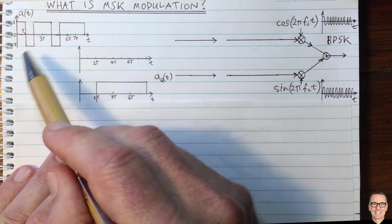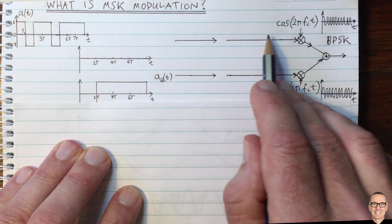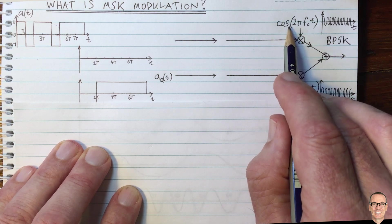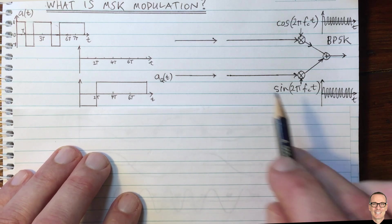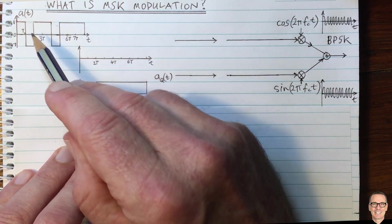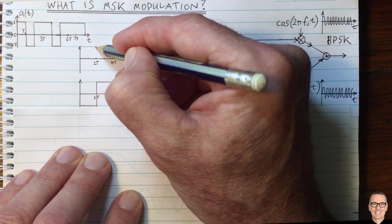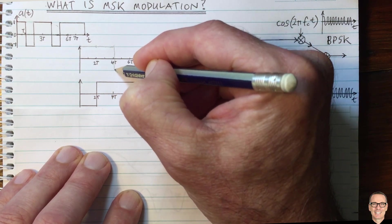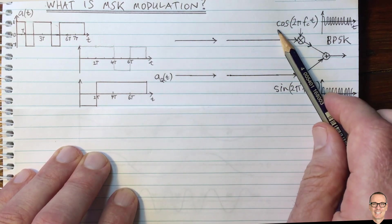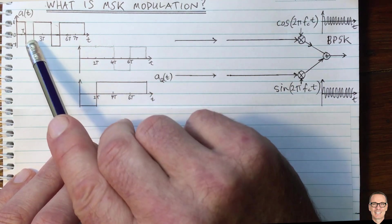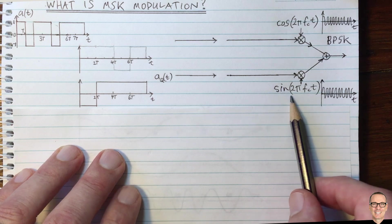We take every odd data bit and send it on the cosine wave, and every even data bit on the sine wave. So the odd bits give us a waveform like 1, 1, -1, 1 on the cosine wave, and the even bits like -1, 1, 1, 1 on the sine wave. We call the cosine component the in-phase component A_I(t), and the sine component the quadrature component.